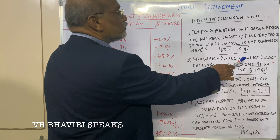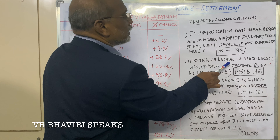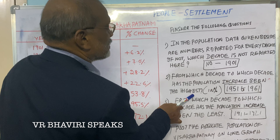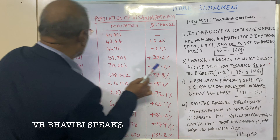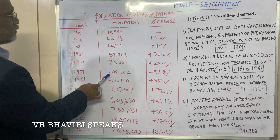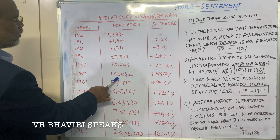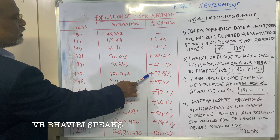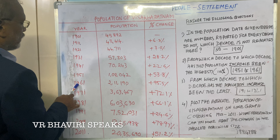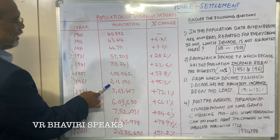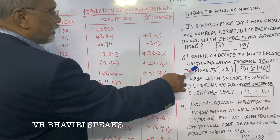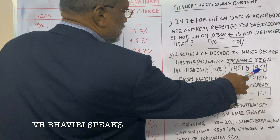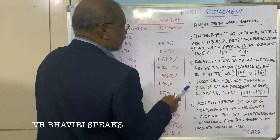Question two: from which decade to which decade has the population increased the highest in percentage? The answer is 1951 to 1961. In 1951, the absolute population is 1,80,442 and the percentage change is 53.8%. In 1961, the absolute population is 2,11,190 with a percentage change of 95.5%. So 1951 to 1961 is the answer.